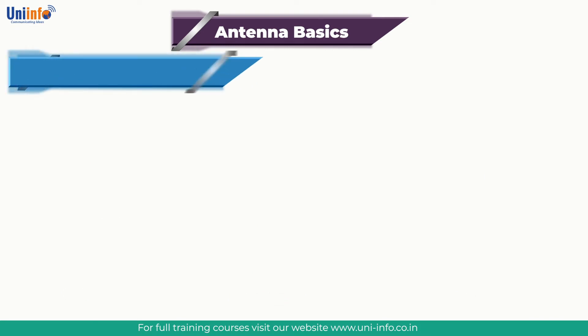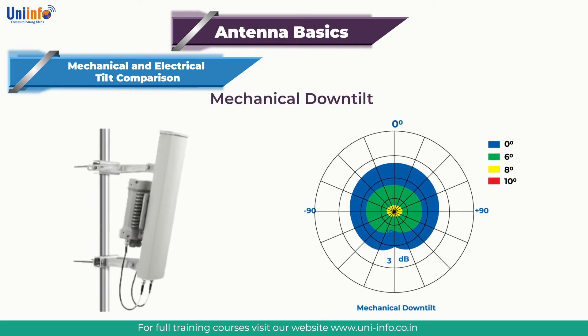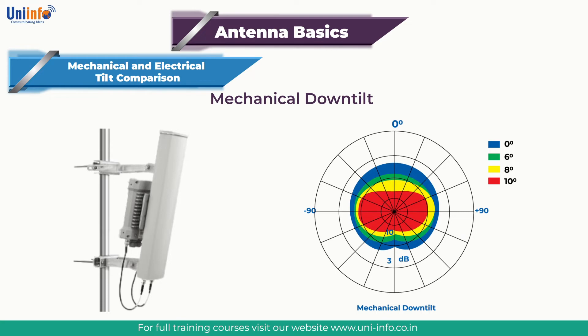Next topic is the mechanical and electrical tilt comparison. Mechanical down tilting consists of physically rotating an antenna downward about an axis from its vertical position. In a mechanical down tilt, as the front lobe moves downwards, the back lobe moves upwards. This is one of the potential drawbacks compared to electrical down tilt, because coverage behind the antenna can be negatively affected as the back lobe rises above the horizon.